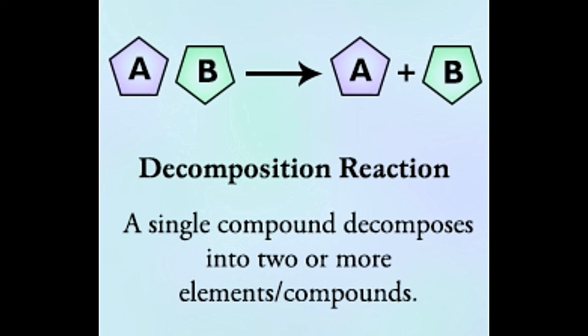Ammonium nitrate is broken down into dinitrogen monoxide and water. NH4NO3 yields N2O plus 2H2O. Mercury oxide decomposes to produce mercury and oxygen. 2HgO yields 2Hg plus O2.